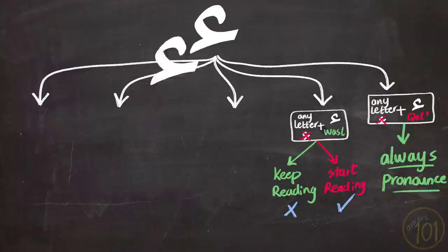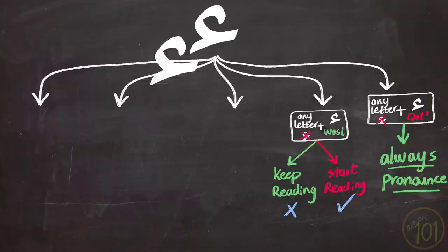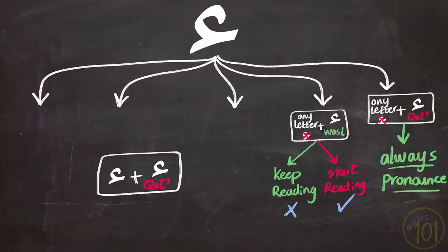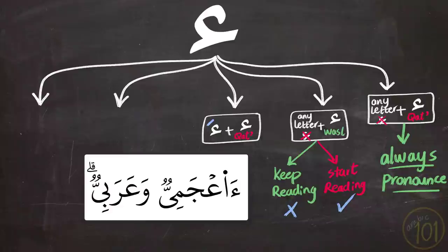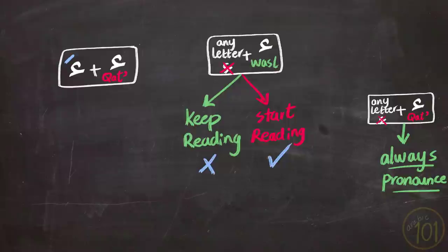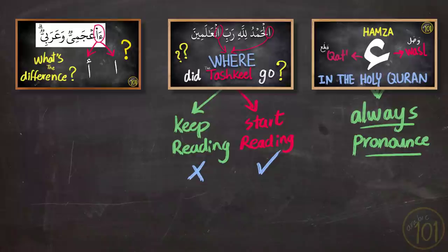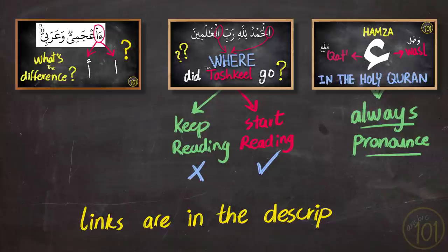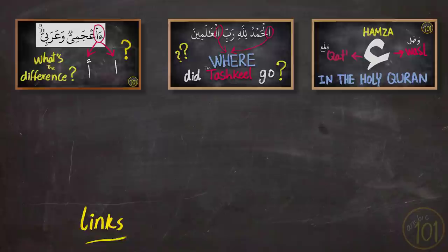The third case is when Hamza al-Qata' is followed by another Hamza that has a vowel on it. This case happens in the Quran with a single word in this example, which has a special way of pronouncing it. These three cases were discussed in detail in previous lessons, so please check them out if you need to understand these cases more or want more examples. It will also help you understand the coming cases even better.